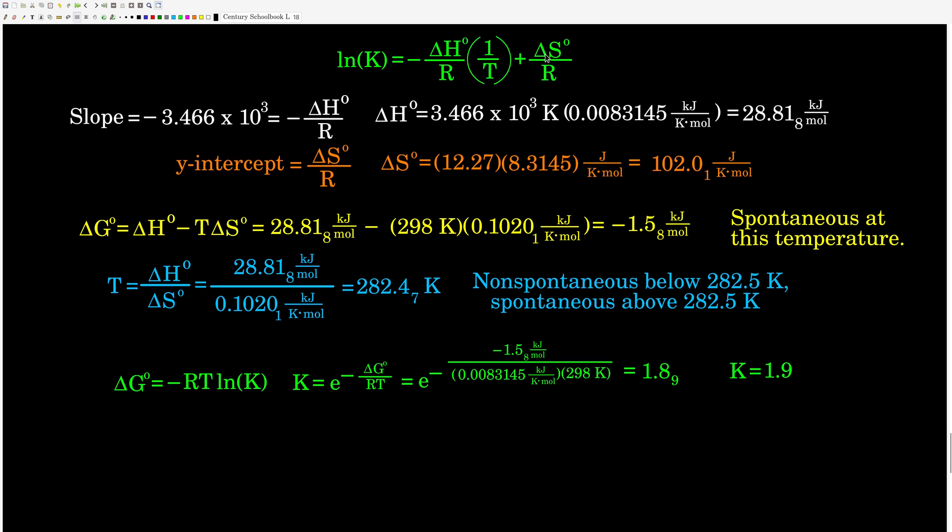Also, we have the y-intercept. Well, the y-intercept is equal to ΔS° over R, so I just take my y-intercept times R. Here I kept it as joules per Kelvin mole, 8.3145, because the units that we typically see entropies in are joules per Kelvin mole. So we get ΔS° is 102.0 joules per Kelvin mole.